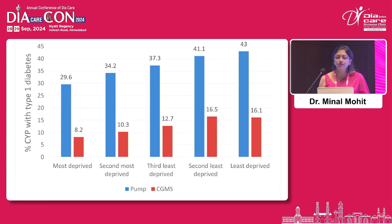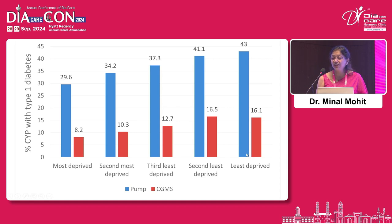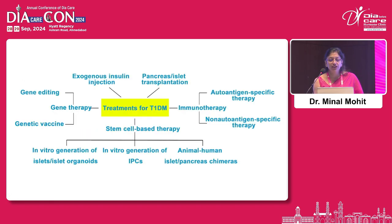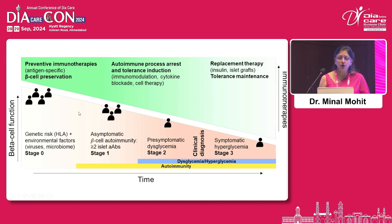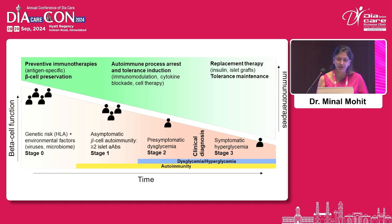Socioeconomic heterogeneity — we are still far away. This is not from Indian data; otherwise the bars would have been even worse. People are deprived of pumps and CGMS. Among the least deprived population, 43% are on pumps and are also using CGMS. Treatment heterogeneity — depending upon understanding of the heterogeneity, we think of gene therapy, stem cell-based therapies, immunotherapies, transplants, or basal-bolus insulin, or even continuous subcutaneous insulin infusion. If we know the heterogeneity and catch them early, we can intervene in the right manner and potentially prevent type 1 diabetes.